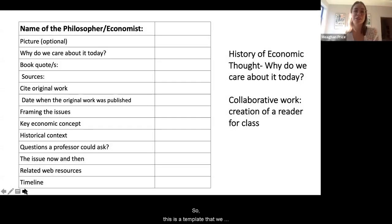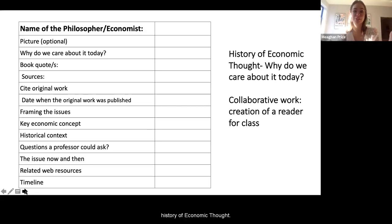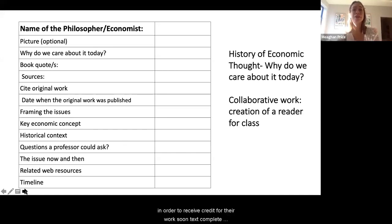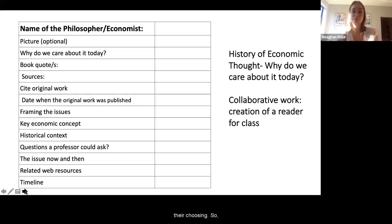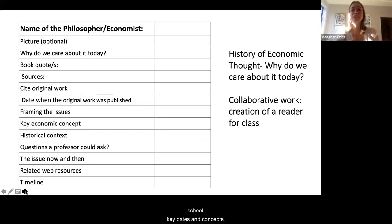This was the template we used for the reader that we began creating this past semester, along with five students from Dr. Gabriele's history of economic thought course. This was an optional, project-based extra credit assignment. In order to receive credit, students had to complete a template for a specific economic school of thought of their choosing. They would have to describe notable economists from each school, key dates and concepts, the historical context of the school of thought, and how it does or doesn't fit into the current view of economic thought today.